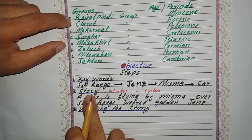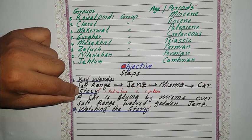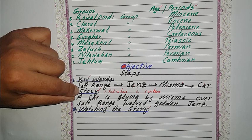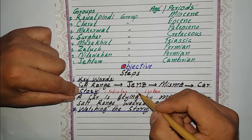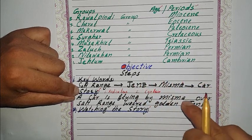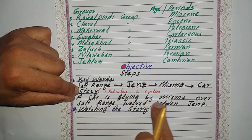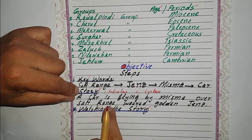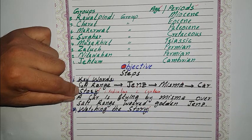So we will apply the second step: a story about this key. Two things are necessary for the story — it must be ridiculous, and it must contain these keywords. For example: 'A car is flying by mesma over the Salt Range wearing golden jeans.' This story contains all the keywords.